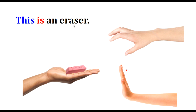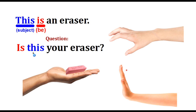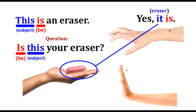This is an eraser. The subject is 'this,' the verb 'is' is singular. The question is: Is this your eraser? In the question, 'is' comes first, then the subject. Is this your eraser?